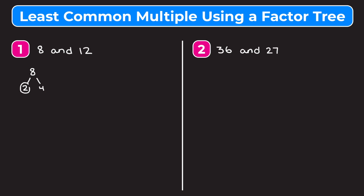When we get a branch that has a prime number at the end, we want to circle it, so we circle 2 because it's prime. Because 4 isn't prime, we need to continue breaking it up until we're left with just prime numbers at the ends of our branches. So 4 can be broken up into 2 times 2, and now we have prime numbers at all branches — we're finished with the factor tree for 8. Now for 12, let's break it up into 3 and 4. Three is prime so we circle it; 4 is not, so we continue to break 4 into 2 times 2 and circle those.